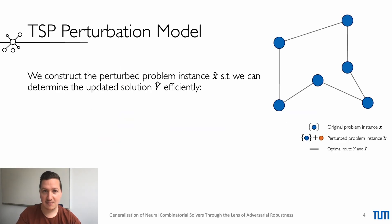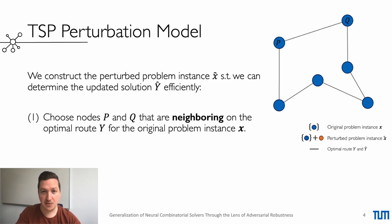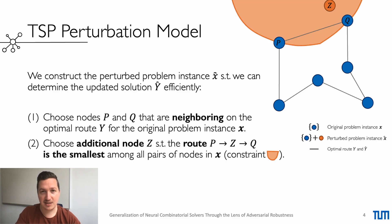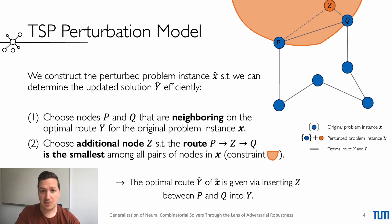I'm Simon Geisler and I will now explain how we construct our attacks such that we can determine the updated solution efficiently. We resort to the previous example. First, we choose two nodes P and Q that are neighbors in the original problem instance X. Second, we insert an additional node C such that the route P, C, Q is the smallest among all possible pairs of nodes in the original problem instance. In this example, this corresponds to the constraint that C lies within the orange area. This way, we know the optimal solution remains the same except for the detour P, C, Q. We then use a variant of projected gradient descent to optimize over node C's coordinates.